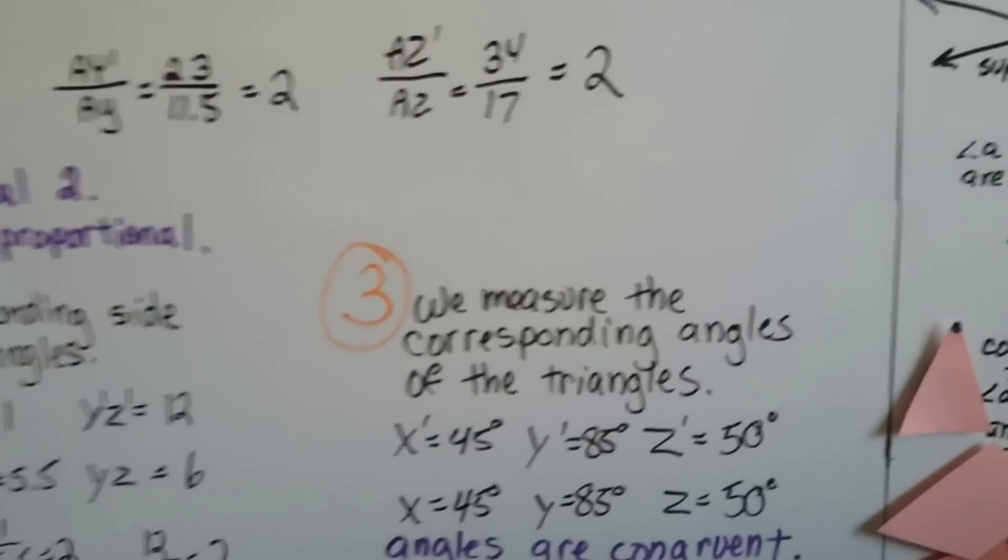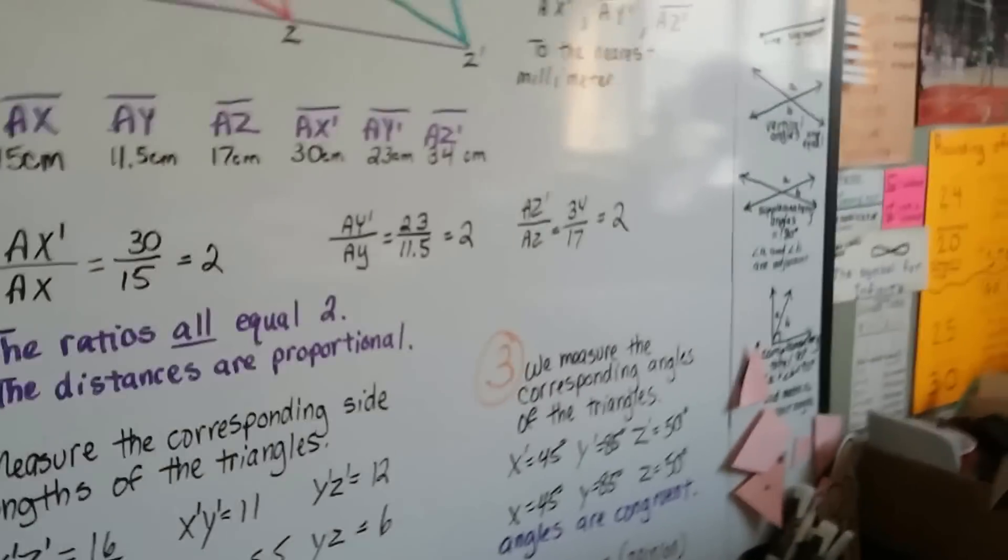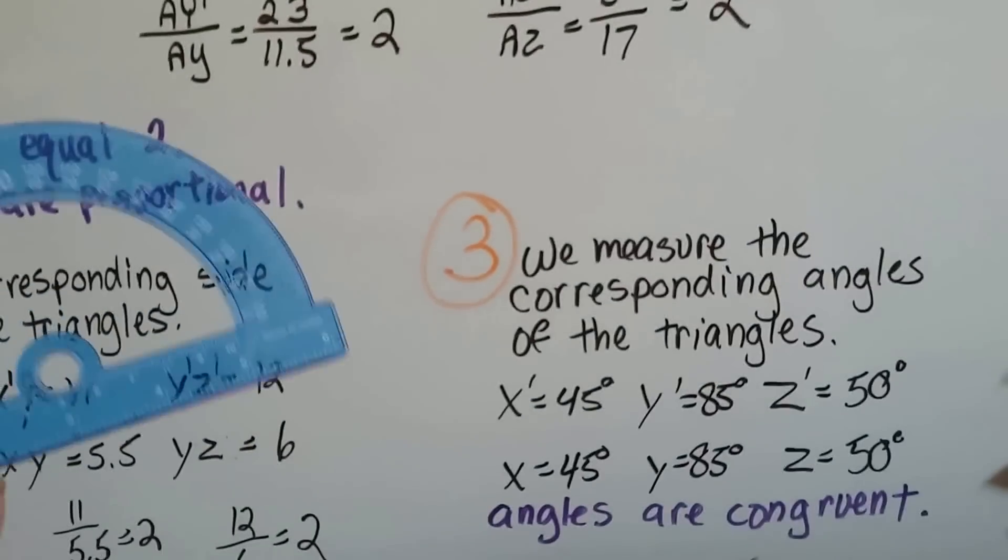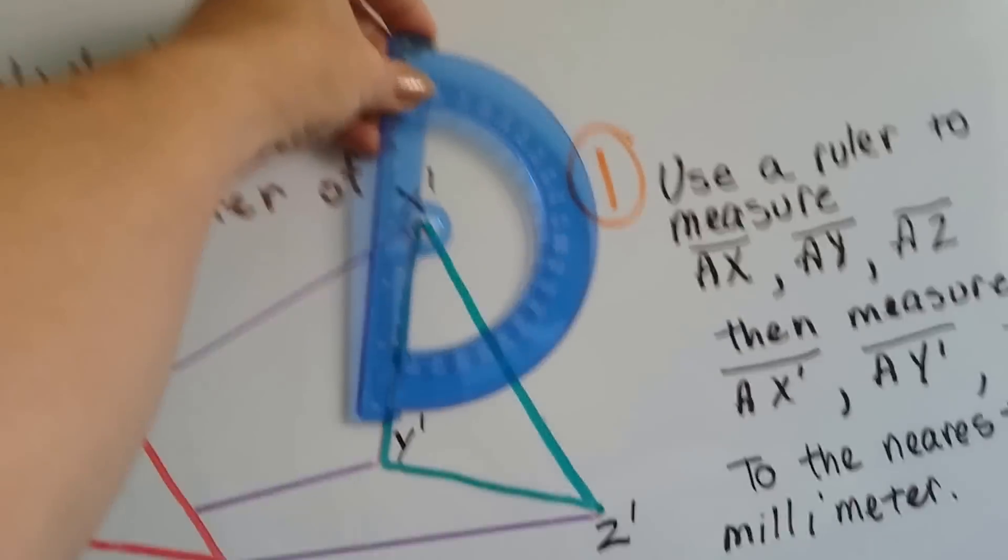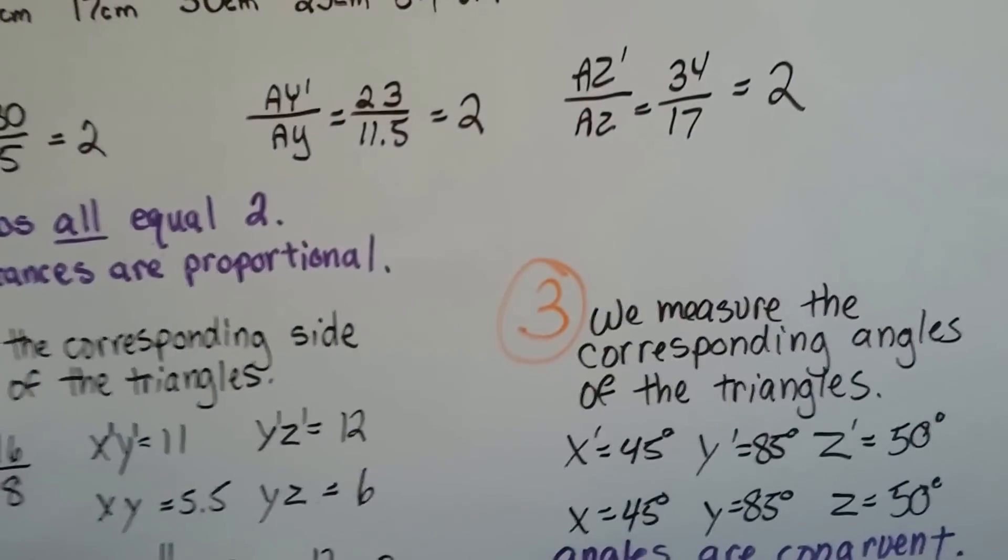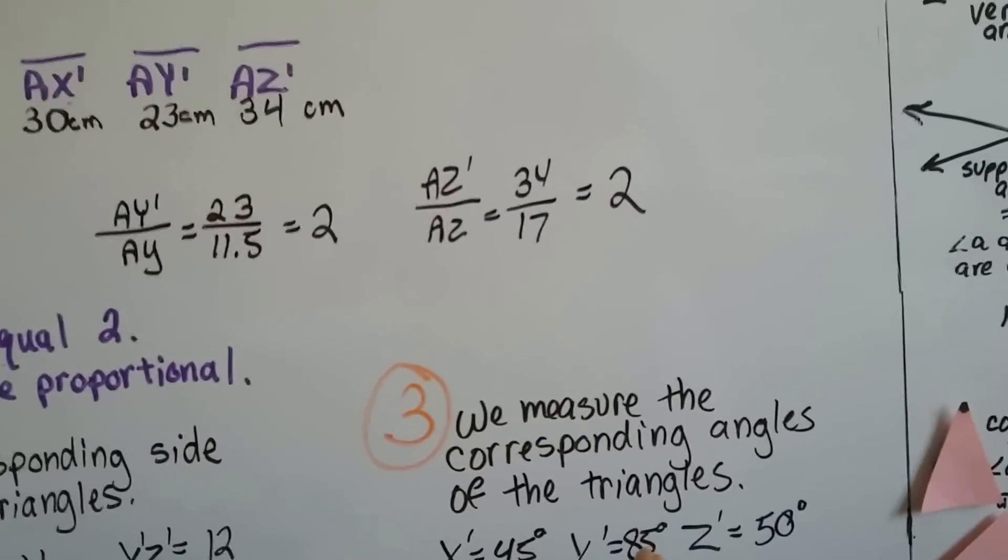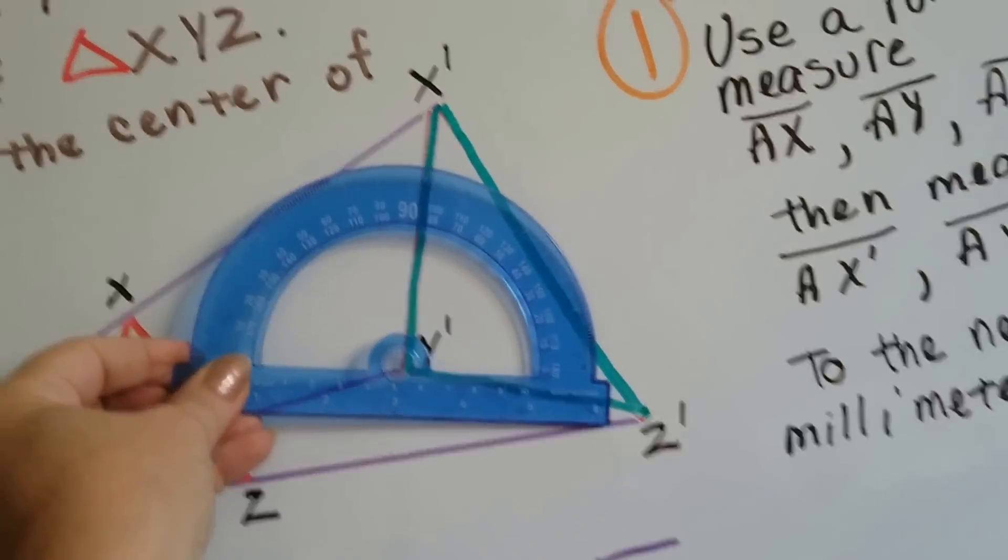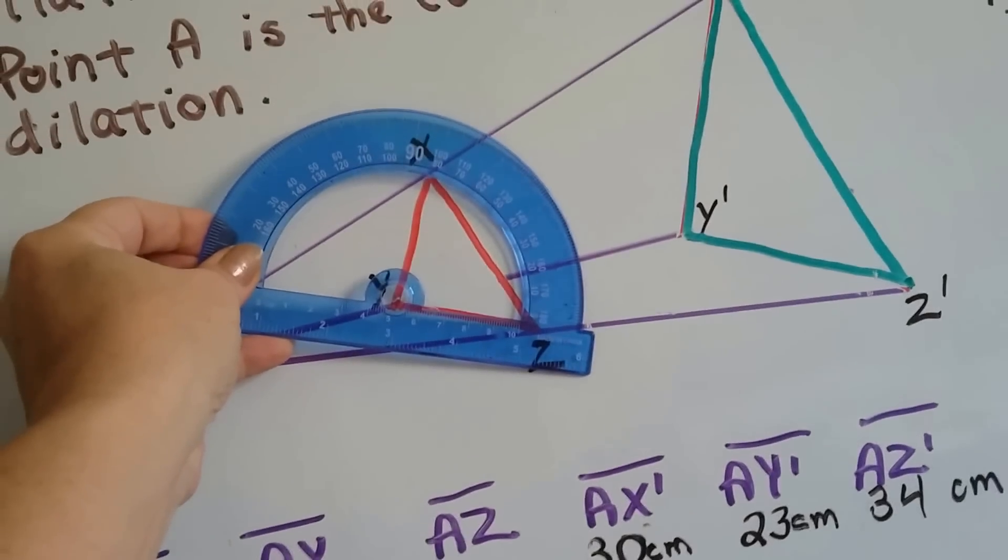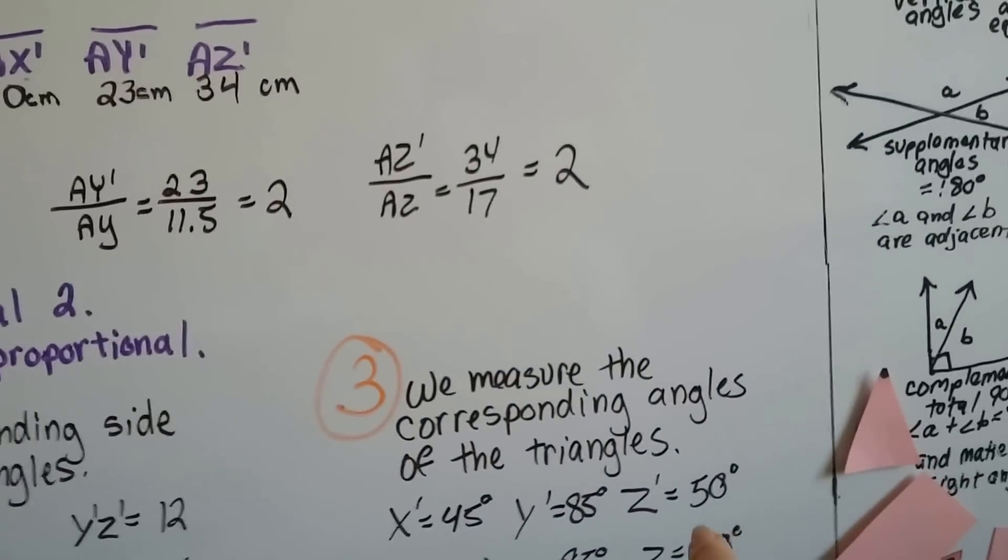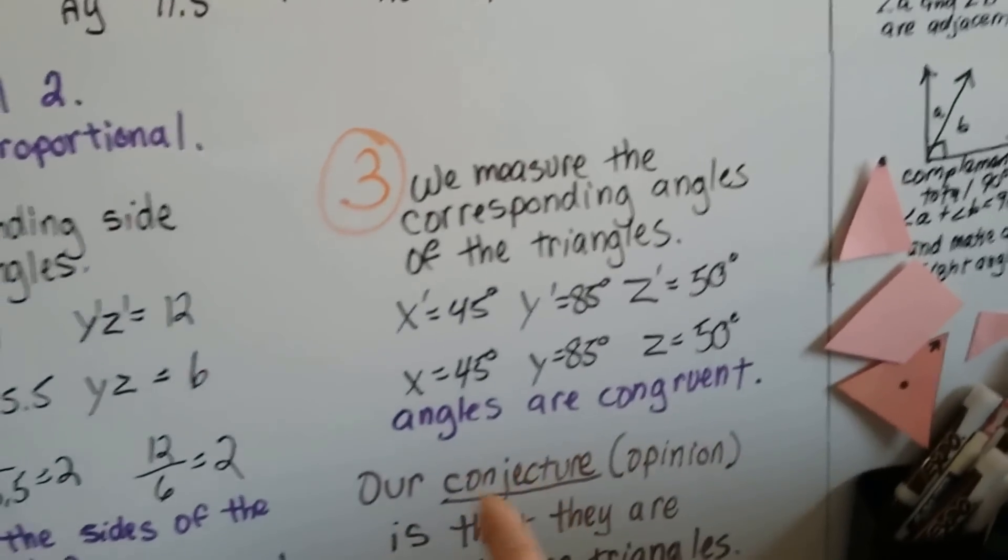Now, the last thing we do is measure the corresponding angles of the triangle. So, we've got our trusty protractor. We're going to measure the corresponding angles of the triangles. We measure X prime and we lay this here and we got 45 degrees. We measured X and we got 45 degrees. We measured Y prime and got 85 degrees. It was not quite 90. We measured Y and got 85 degrees. Not quite 90. And Z prime was 50 degrees. And Z was 50 degrees. So, the angles were all congruent.